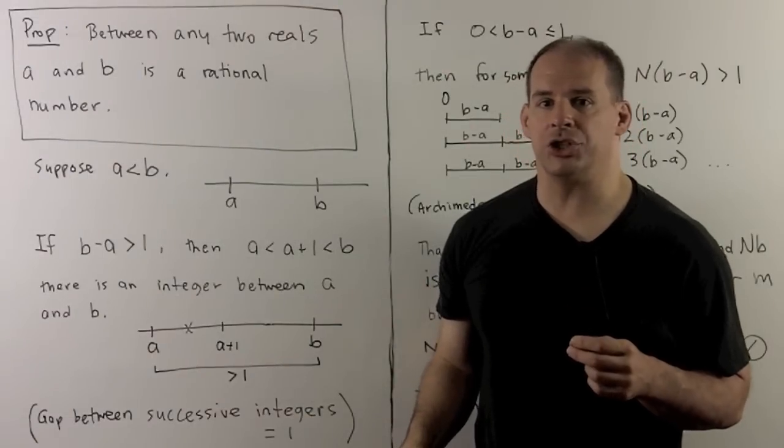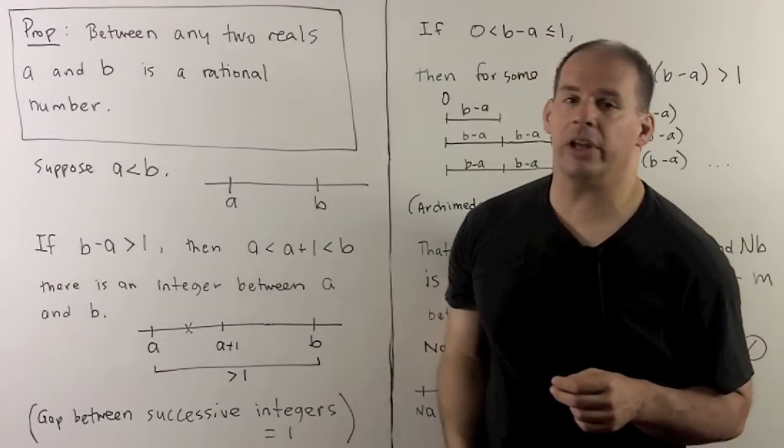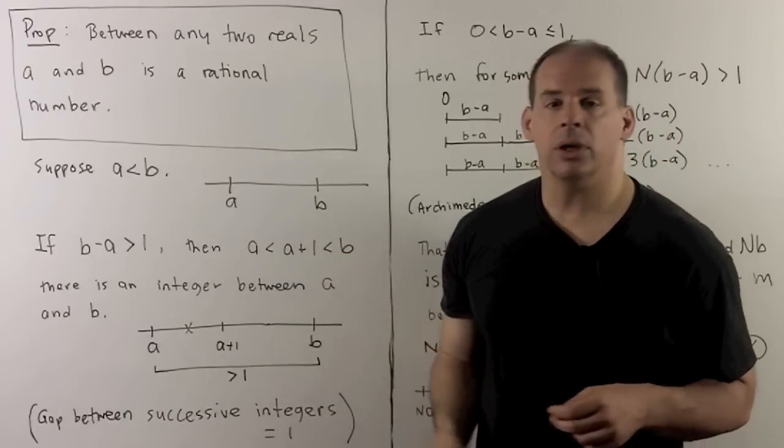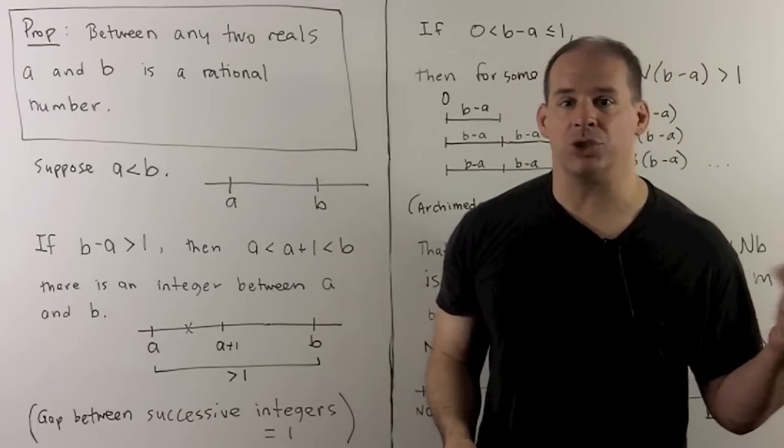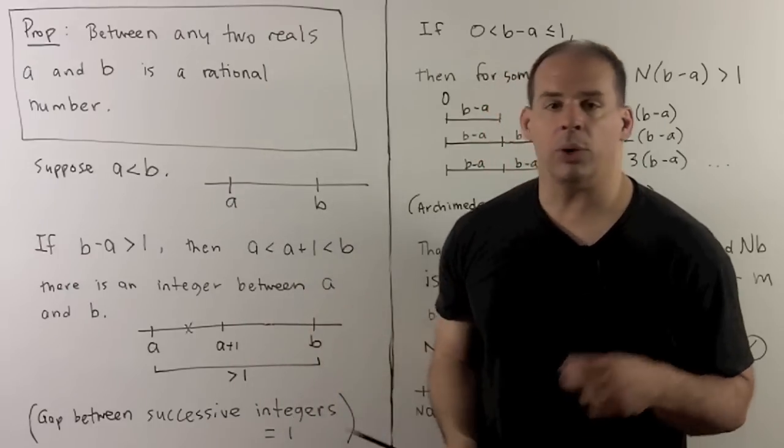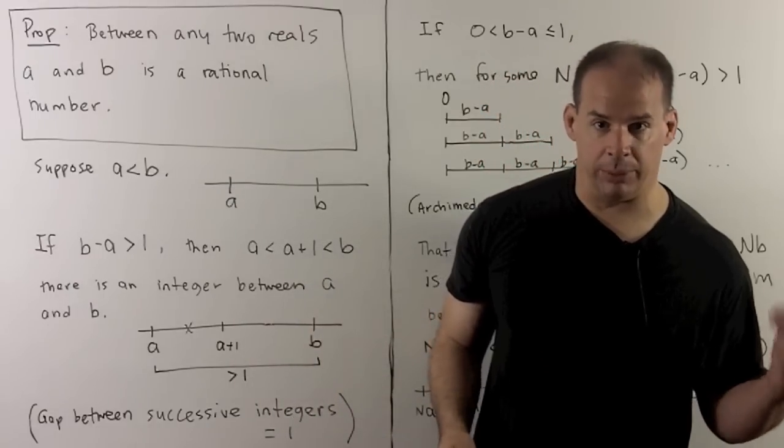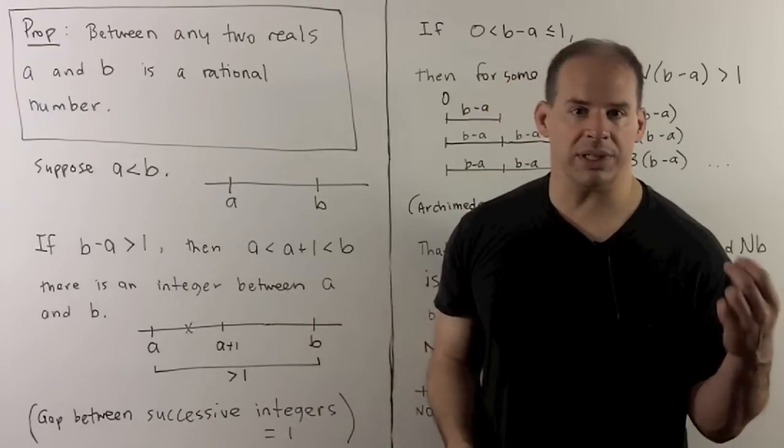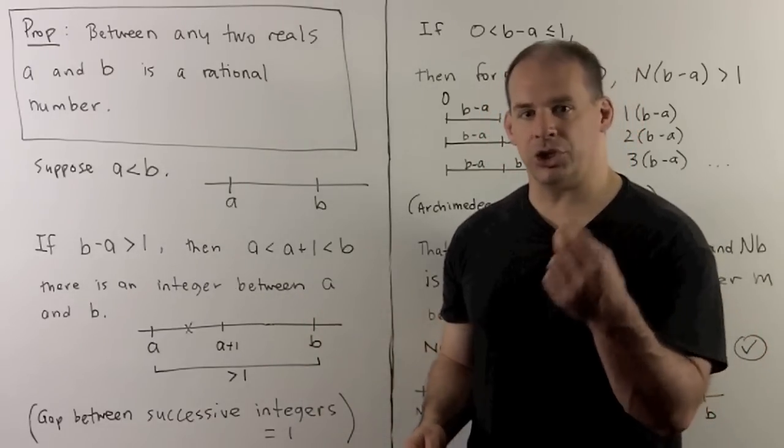Slightly more complicated to show, between any two real numbers is also a rational number. To see this, we choose real numbers a and b, with a strictly less than b. Okay, the picture looks like this. We argue based on the distance between a and b. Now, if that distance is strictly bigger than one, what can we say?